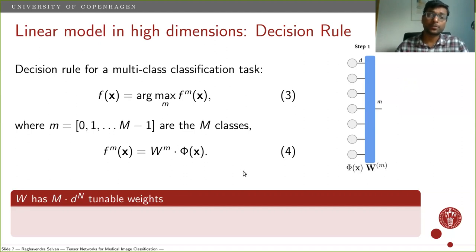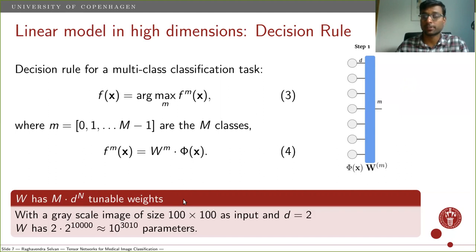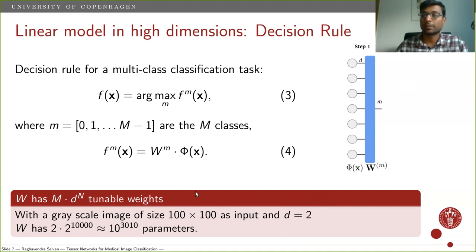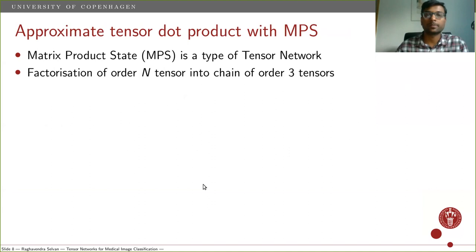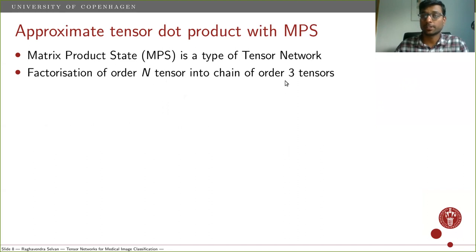If you consider how many tunable weights this parameter W has, it's exponential in n — a really humongous number. Even for a reasonably sized image like 100×100 with a local feature map dimension d equal to 2, we end up with a massive number of parameters. This is where tensor networks come in. In this work we use the matrix product state (MPS) tensor network, which allows us to factorize any order-n tensor into a chain of order-3 tensors with a reasonable degree of approximation.